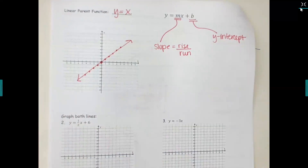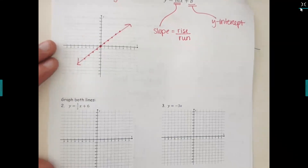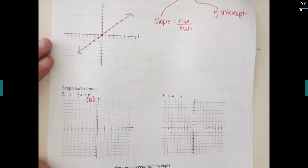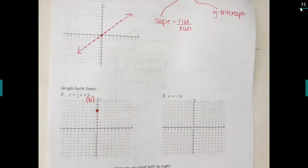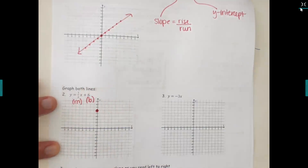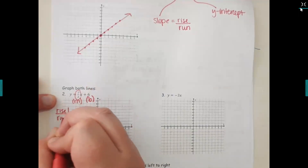When we put numbers into the equation, it changes how the graph looks. For question two, the b is six, so you always begin with the b — go to six on the y-axis. Then use the m to move to the next point. Since m is one-half, you rise one and run two. Starting from the dot at six, count up one box and over two boxes — up one, over two — then connect your dots with a straight line.